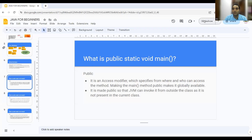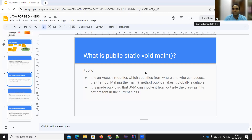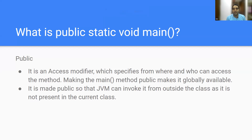Let us look into what public static void main means. Let us dissect this entire thing into small pieces and understand each part in detail. Pause this video and think for one second — what could it mean? In plain English: void means null or blank, main means the main authority, static means it's going to be constant, and public means it will be accessible.